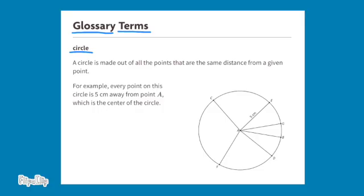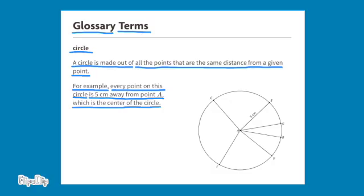Glossary Terms. Circle. A circle is made out of all the points that are the same distance from a given point. For example, every point on this circle is 5 centimeters away from point A, which is the center of the circle.